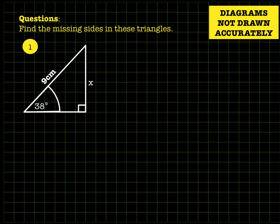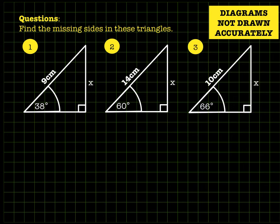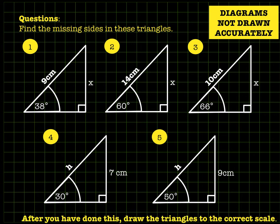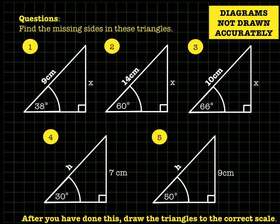Here are five questions — some triangles for you to find the missing sides in. You might want to pause now and try those before looking at the answers. After you've done that, you can draw the triangles to scale — not necessarily exactly the same size, but double or half size — and check that those angles and sides do indeed meet up at the vertices, confirming they are working triangles.